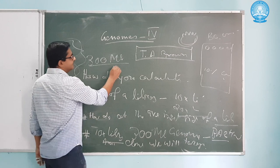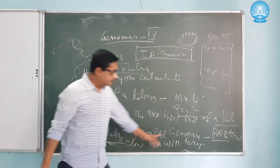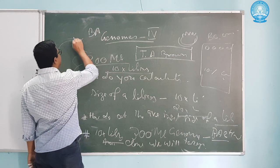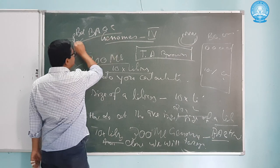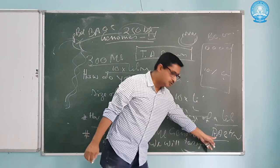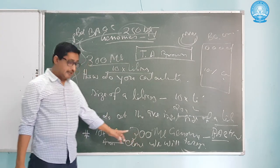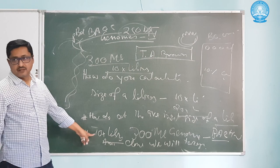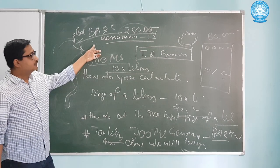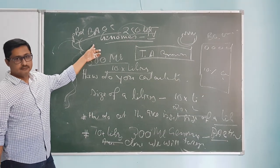We know that the genome size of a particular organism is 300 MB, megabases. Now, we need a 10x library, and we will be using BAC, suppose a particular BAC vector with insert size around 250 KB. If we take 150 KB average, and we have to represent 300 MB at 10x library, how much clones will we have to target? How will we actually design our ligation experiments, transformation experiments, etc.? In the next class, we will discuss that. Thank you.